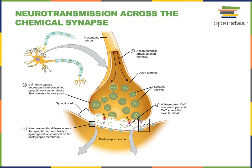In the mechanism of exocytosis, the synaptic vesicles will release neurotransmitters into the synaptic cleft. Then these neurotransmitters diffuse across the synaptic cleft and bind to receptors that are on the postsynaptic cell's plasma membrane.